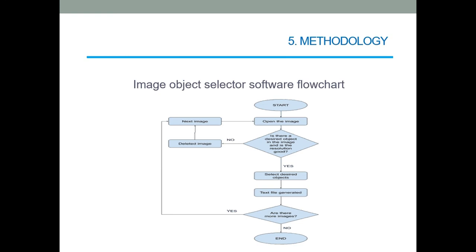Starting the methodology section, there is the flowchart of the software that was used to select the objects in the image that were downloaded and then creates the text files with the information of the localization of the object in the image. After downloading the image, this is what has to be done in order to prepare the database to the training.